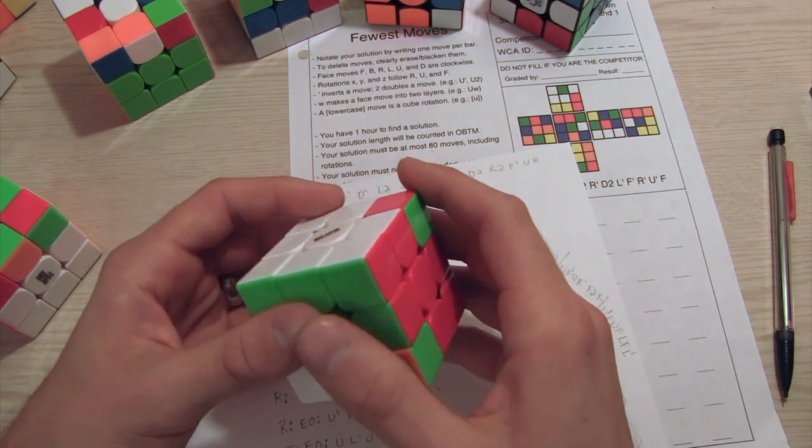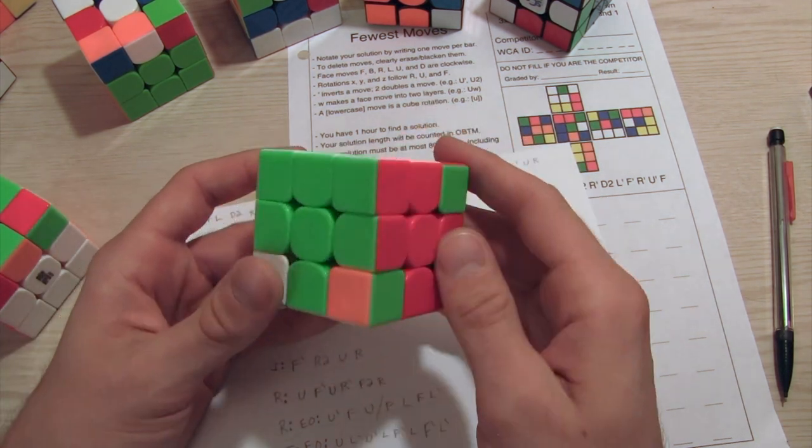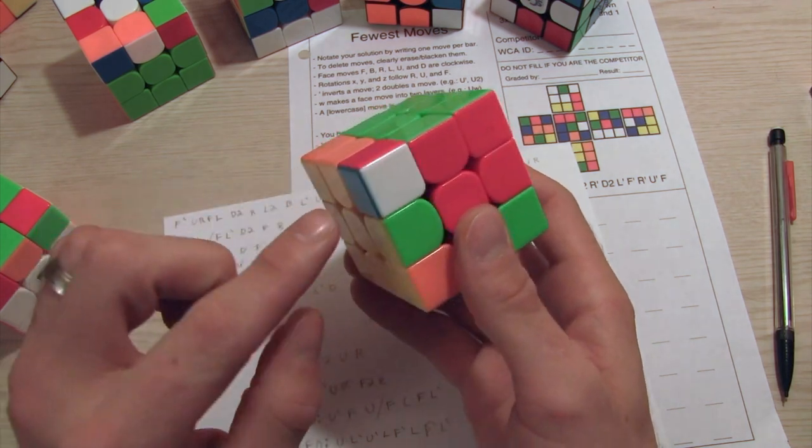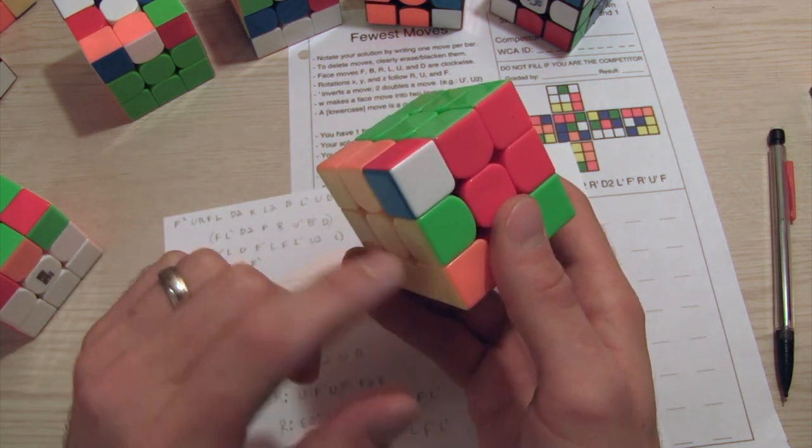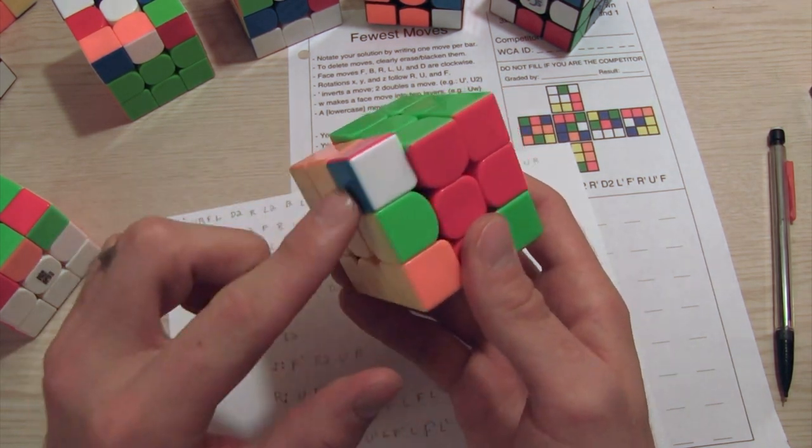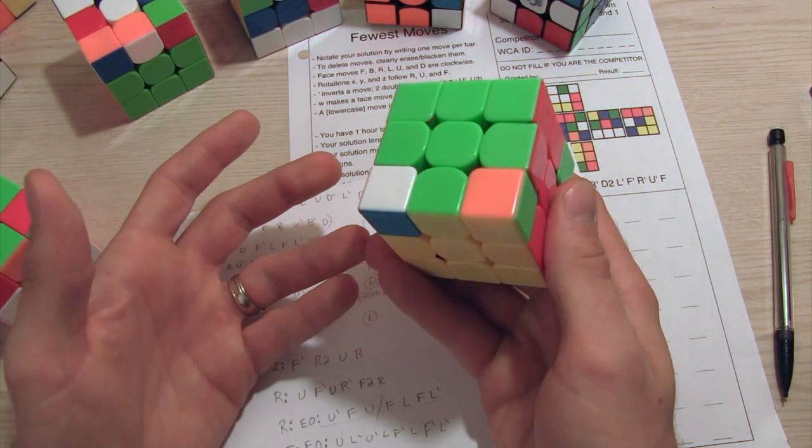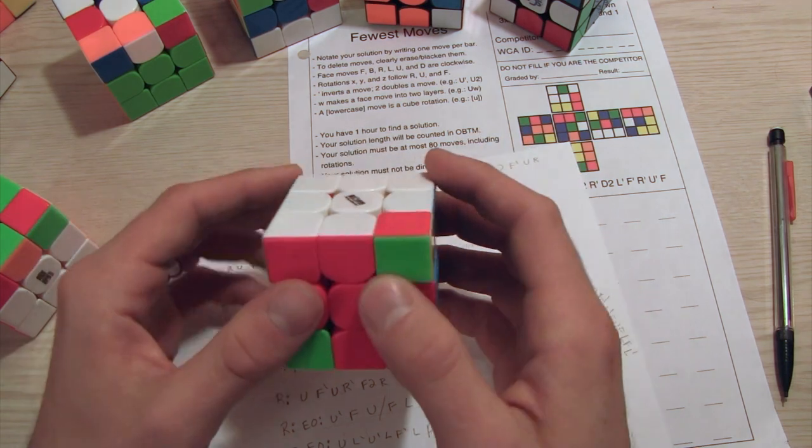So the way it also needs to be set up is that that b move, b move is a little confusing because I'm not talking about back. The second move that you're going to use, which is on the down layer, needs to be the same color that this is, so that way you can just move it over, and this will go right back in.